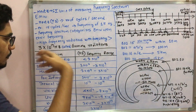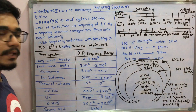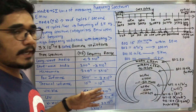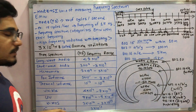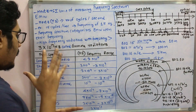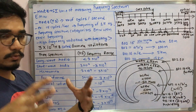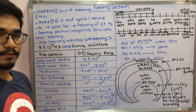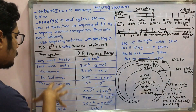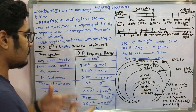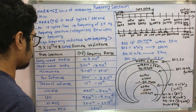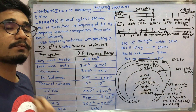Thermal infrared falls between 3×10^13 to 3×10^14 hertz. Then we have the visible spectrum — the visible light we can see, where photons fall onto objects allowing us to see them and their colors. The visible range is from 4×10^14 to 7×10^14 hertz.